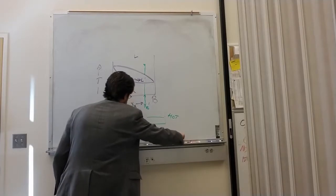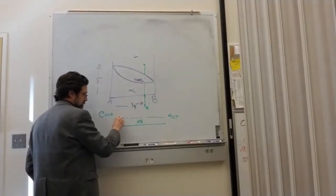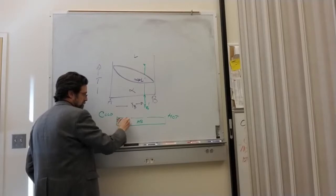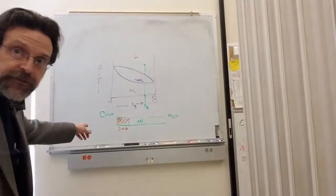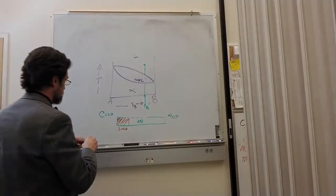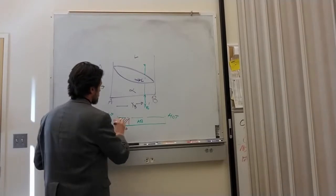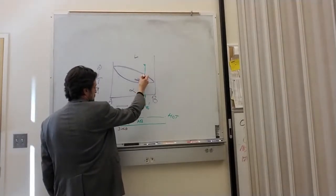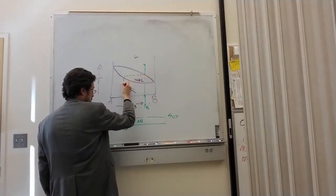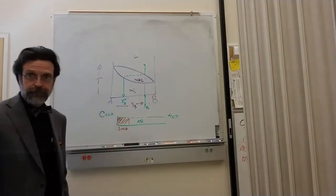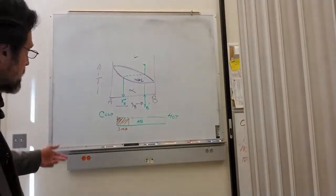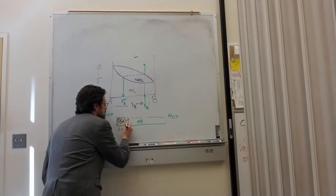So we're going to start to get solid forms. And the composition of that solid is going to be here, xB1. It's the first alpha that's coming out of here. Call this alpha. Call this liquid.